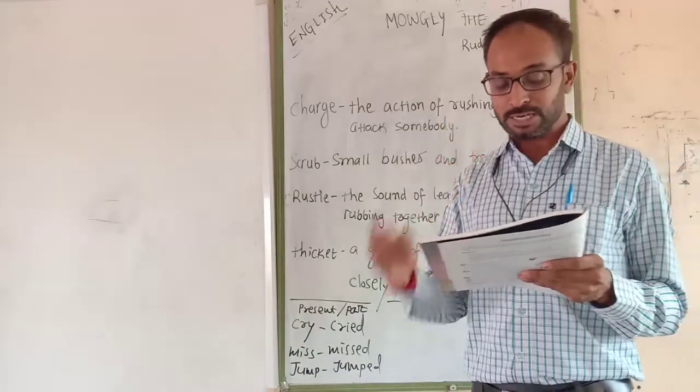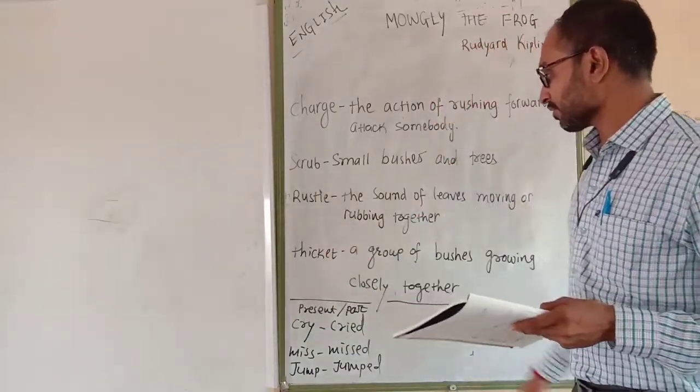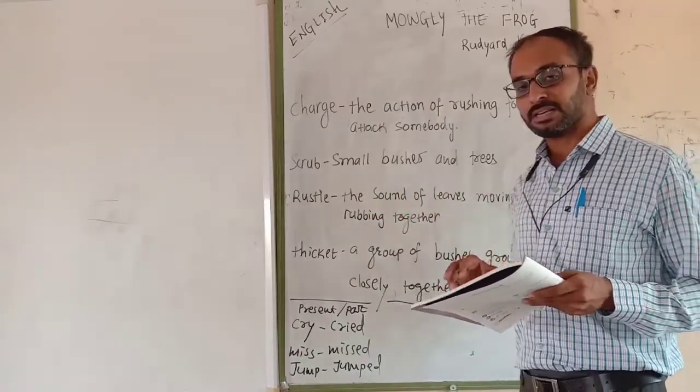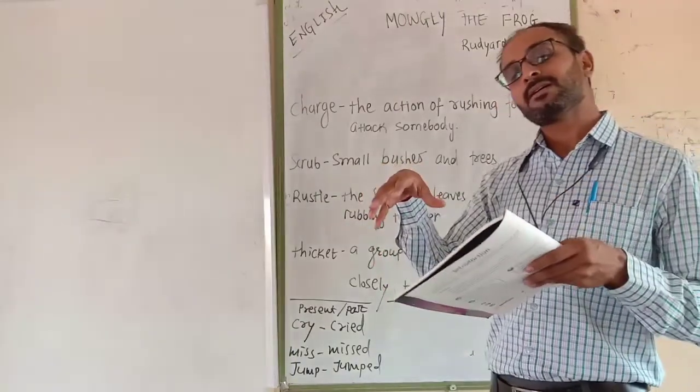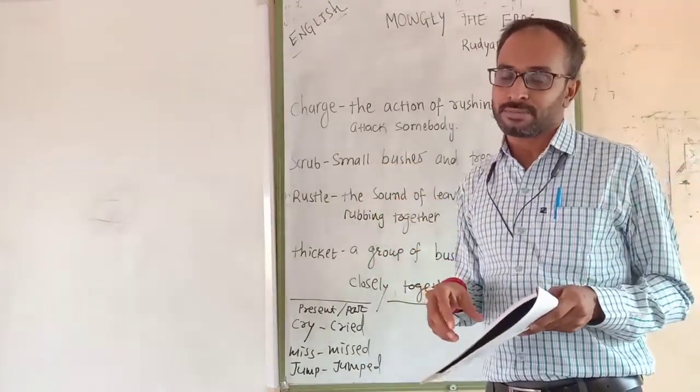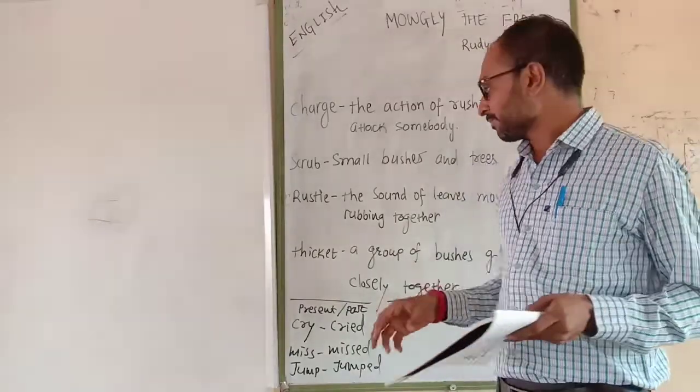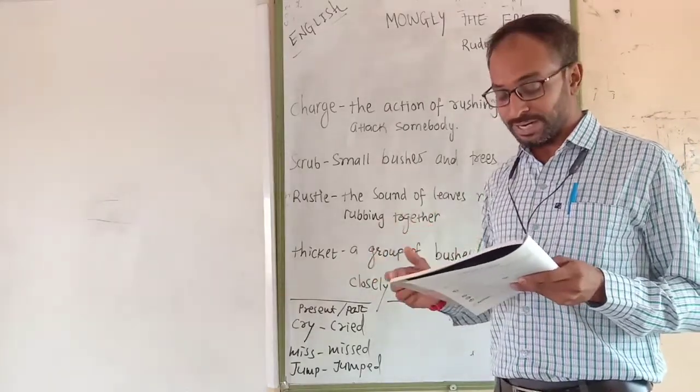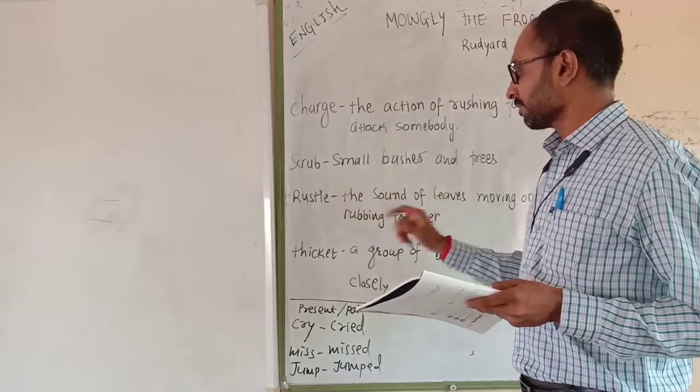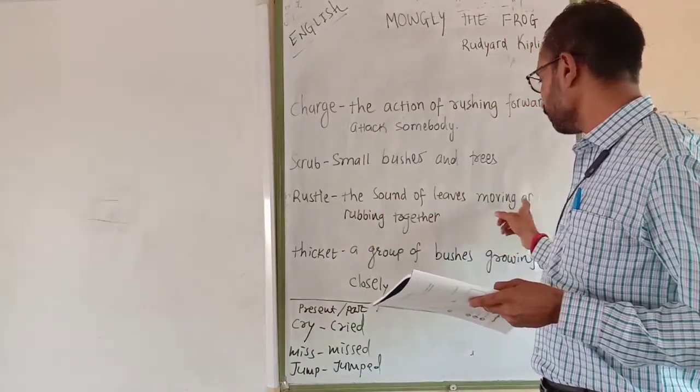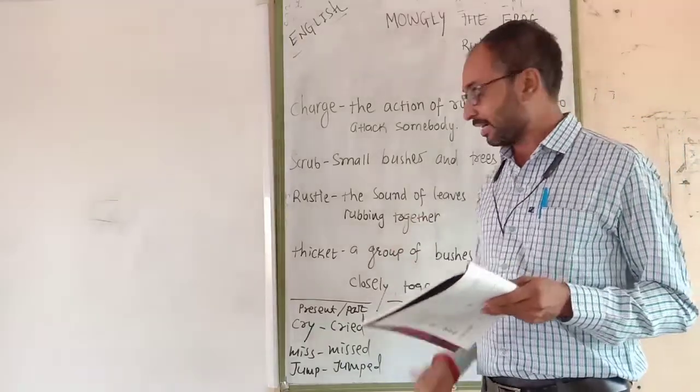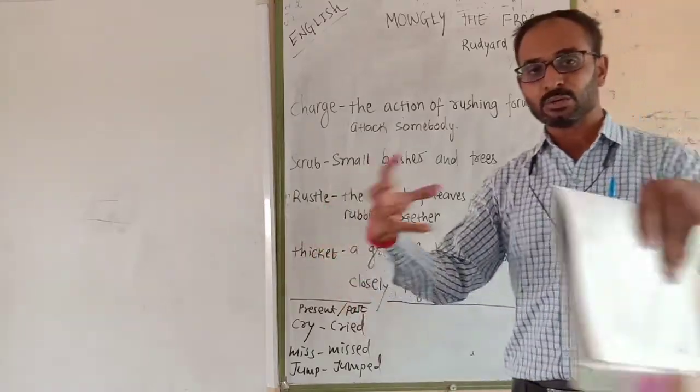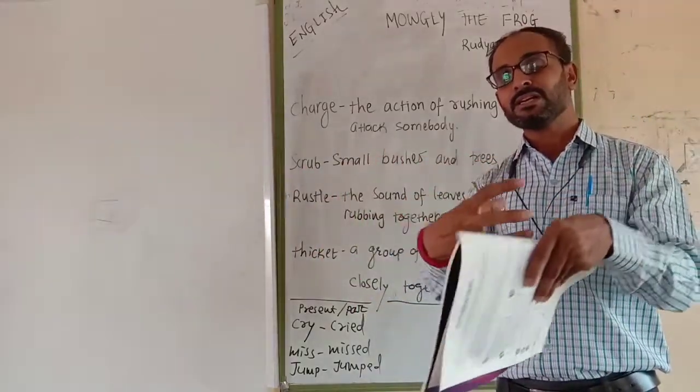Suddenly the thicket rustled a little in the thicket and father wolf got ready for his leap. There are two new words here. One is rustle - rustle means the sound of the leaves moving or rubbing together. It always happens when the leaves fall down. Another one is thicket - a group of bushes growing closely together.